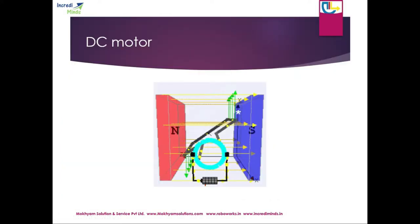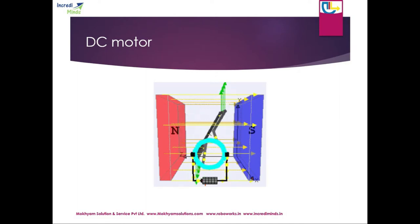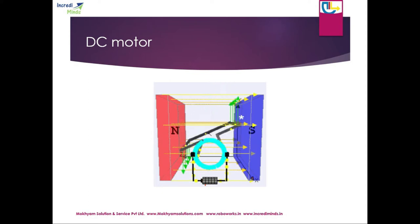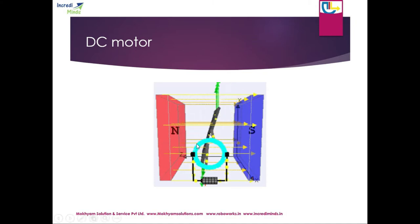This is the basic mechanism of a motor. The magnetic field goes from north pole to south pole. When we use the magnetic field, we have a current-carrying conductor. You can see this loop — this is a loop.